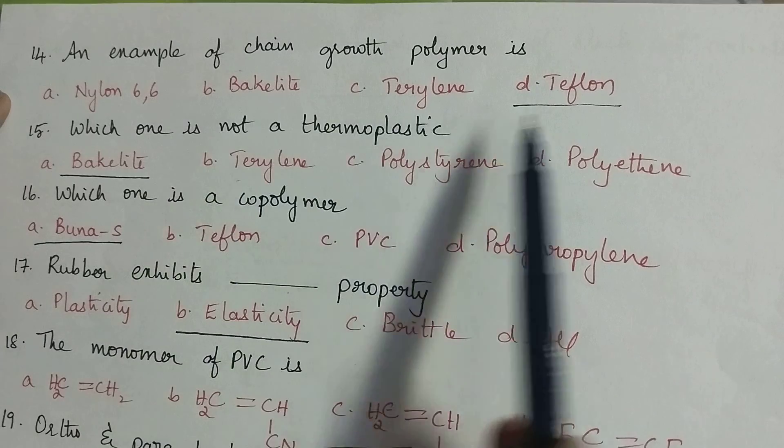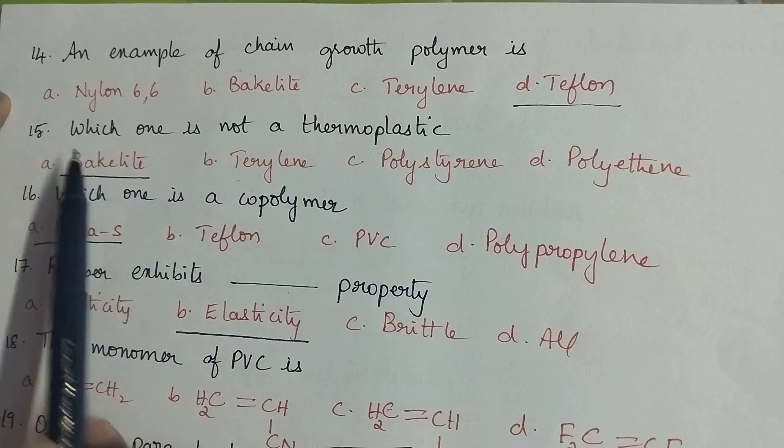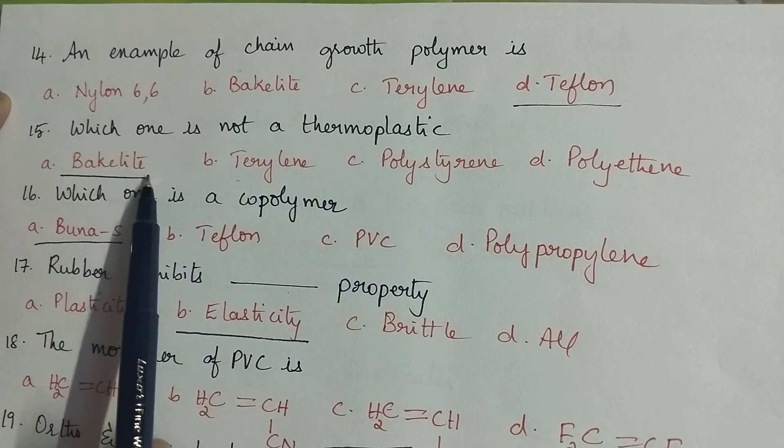An example of chain growth polymer is Teflon. Teflon is a good example for chain growth polymer. Which one is not a thermoplastic? Bakelite is not a thermoplastic.